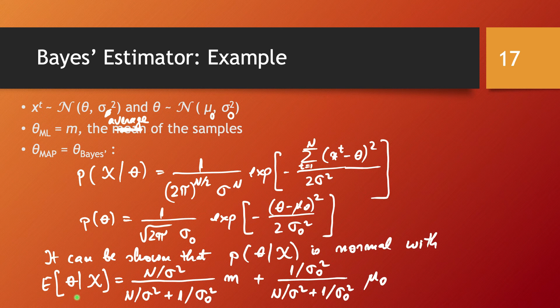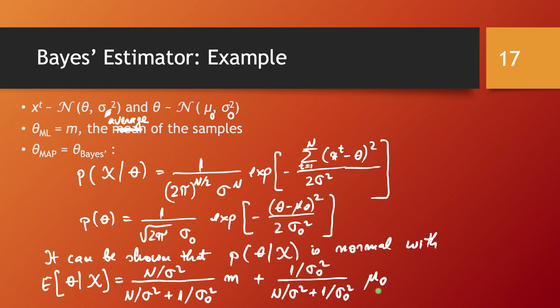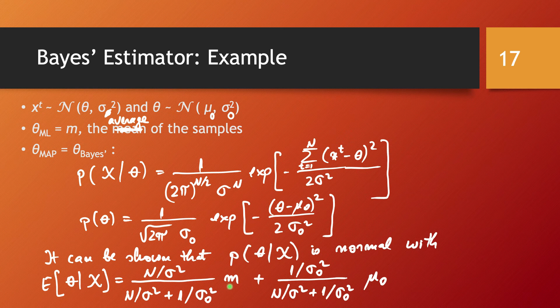And I want to comment about this expression of the expected value of theta given x. The Bayes estimator is the weighted average of the prior mean mu 0, which is this one, and the sample mean, which is m. And the weights are being inversely proportional to their variances.